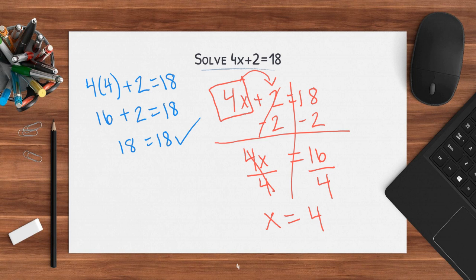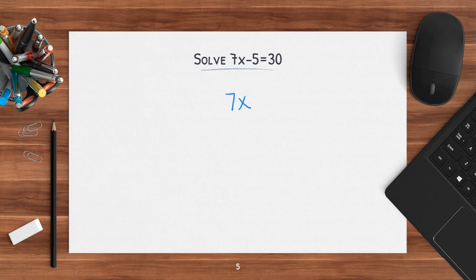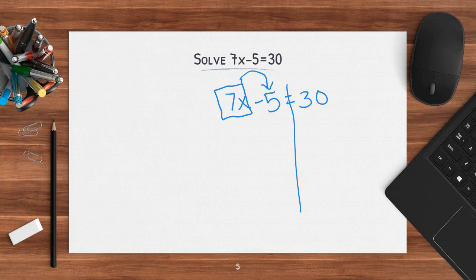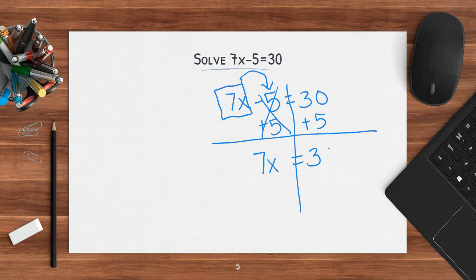Check yourself before you wreck yourself. Now I have 7x minus 5 equals 30. I draw my line down my equal sign and look at where my variable is. My variable is with 7, so I need to get rid of that last. What isn't with x but is on the same side is this minus 5. The inverse of subtracting is addition, so I add 5 to both sides. Negative 5 plus 5 cancels out, leaving 7x equals 30 plus 5, which is 35. Now 7 and x are together — that means multiplication — so I divide by 7. 7 divided by 7 is 1, so x equals 35 divided by 7, which is 5.